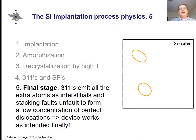In the very end, all the {311} defects have emitted their extra atoms as interstitials, and the stacking faults have emitted or absorbed their interstitials — the planes can shift to give perfect dislocations. When finally all the defects are in perfect dislocation loops or have vanished at the surface, the device works as intended. As you can see, there is quite a lot of physics involved. In the early 1990s this was poorly understood, but from roughly 1990 to 2010–2015 one has reached this level of understanding.